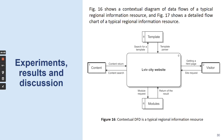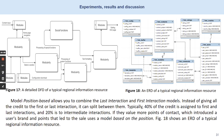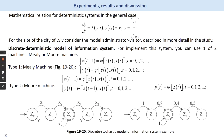In this slide you can see a contextual DFT of a typical regional information resource. This slide shows a detailed DFT and an ERD of a typical regional information resource. Mathematical relations for a deterministic system in the general case are presented. For the site of the city of Lviv, the administrator-visitor model is described in more detail in the study, as well as a discrete deterministic model of an information system. Here you can also see a discrete stochastic model of information system example.